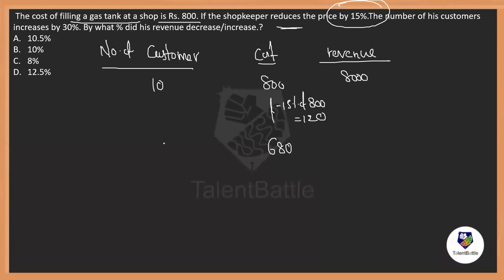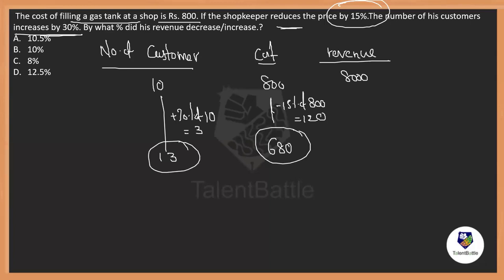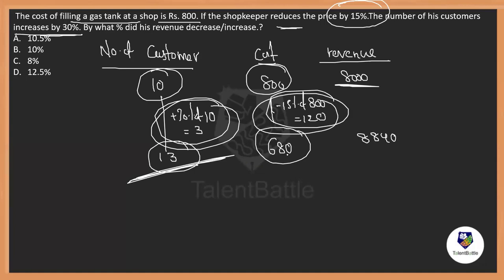And the customers — what is going to increase by 30%? So 30% of 10 is 3 people more, making 13 people now. So what is the new revenue? 13 people at 680 rupees each gives 8,840 rupees. Before: 10 people at 800 rupees = 8,000 revenue. Now: 13 people at 680 = 8,840. So it is definitely an increase.